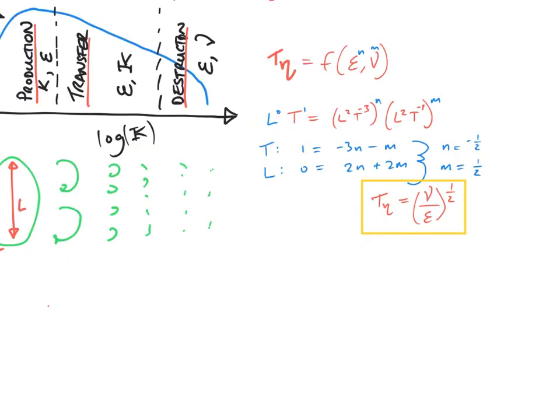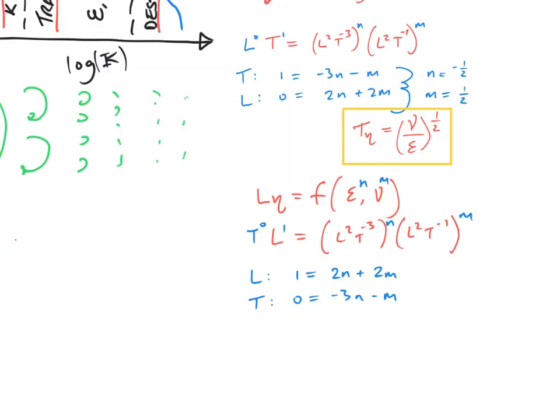And now similarly to find the Komogorov length scale. In exactly the same way, we know that it's a function of epsilon and mu. The unknowns are to the powers n and m, and we relate the dimensions just as before, but this time to get the length scale.